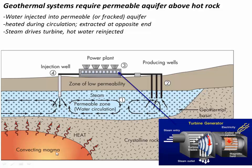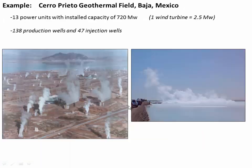The key elements are the heat and the permeable material above it, and then we need a lot of water to actually flow through that hot material. A good real-life example of a successful geothermal plant is called Cerro Prieto, down in northern Baja, Mexico, just south of the US border. This has a roughly installed capacity of 720 megawatts — that's incredibly large, bigger than a nuclear power plant and way bigger than what you can make with solar or wind in most cases. There are 138 different wells where they're extracting the steam and 47 wells where they're injecting the water — a big operation.